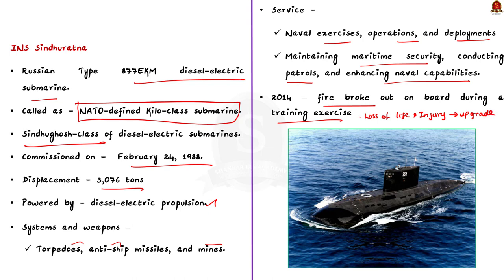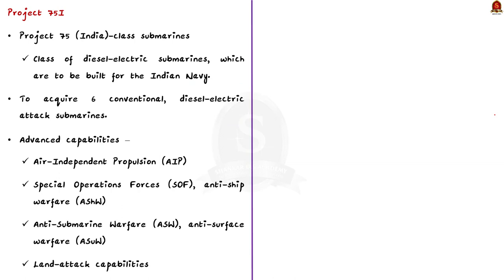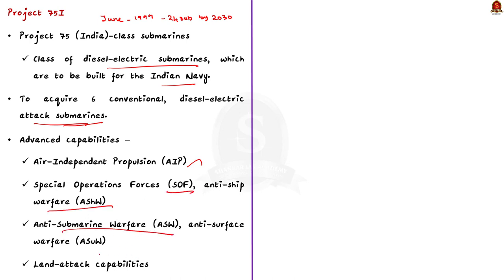We will also use this opportunity to revise about Project 75I. In June 1999, the Cabinet Committee on Security approved a 30-year plan to indigenously build and induct 24 submarines by 2030. In the first phase, two lines of production were established: P-75 and P-75I. Project 75 India class submarines, or P-75I, are a planned class of diesel-electric submarines for the Indian Navy. Under this project, the Indian Navy intends to acquire six conventional diesel-electric attack submarines: INS Kalwari, INS Kanderi, INS Karanj, INS Vela, INS Vagir, and INS Vagir. These submarines will feature advanced capabilities including air independent propulsion, special operations forces, anti-ship warfare, anti-submarine warfare, anti-surface warfare, and land attack capabilities. All six submarines are expected to be constructed in India under the Make in India initiative.